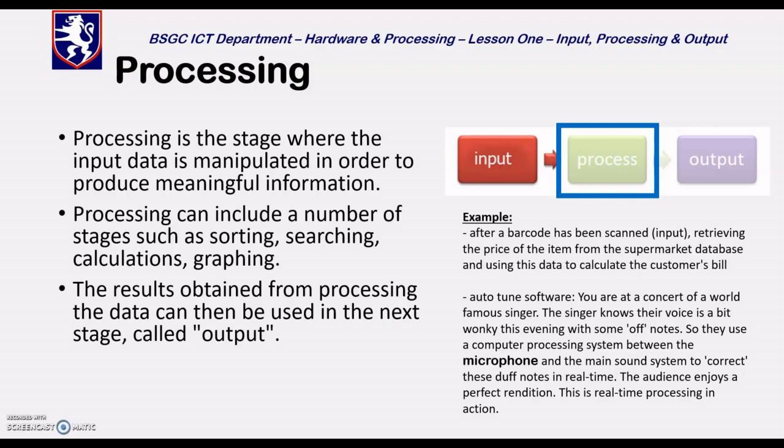Basically, here's an example. So auto-tune is a software. You're in a concert of a world famous singer. The singer knows their voice is a little bit wonky - maybe they've got a sore throat, maybe they've got a cough, or maybe they just don't sing that good. And they've got some off notes. So what the computer will do is the computer processing the system using a microphone and the main sound system is used to correct those duff tones in real time. Now the computer can only do what we tell it to do, so the computer has learned to detect notes that don't quite get where they should get. Therefore the computer will process that sound and it will correct it. And that's the process.